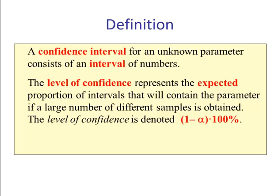If you recall, a confidence interval for an unknown parameter consists of an interval of numbers. The level of confidence represents the expected proportion, or percentage, of intervals that will contain the parameter if a large number of different samples is obtained. The level of confidence is denoted by (1 - α)×100%. In this class, 90%, 95%, and 99%.